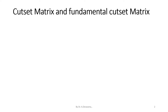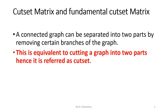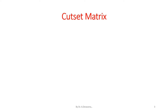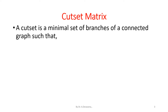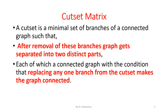A connected graph can be separated into two parts by removing certain branches of the graph. This is equivalent to cutting a graph into two parts, and hence it is referred to as a cut set. A cut set is a minimal set of branches of a connected graph such that after removal of these branches, the graph gets separated into two distinct parts, each of which is a connected graph, with the condition that replacing any one branch from the cut set makes the graph connected.